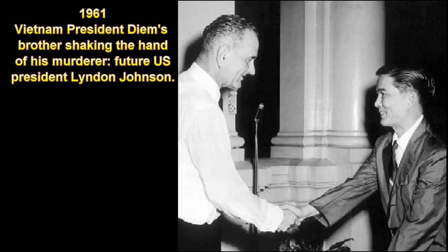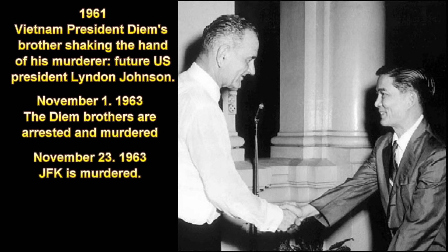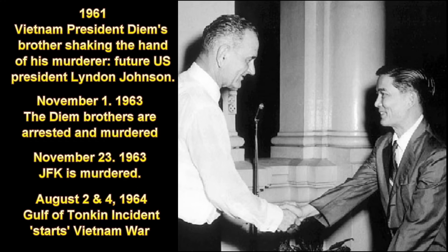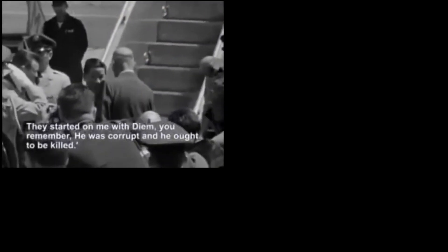In 1961, Vietnam President Diem's brother shook the hand of his murderer — future U.S. President Lyndon Johnson. On November 1, 1963, the Diem brothers were arrested and murdered. Twenty-two days later, JFK was murdered. And on August 2 and 4, 1964, the Gulf of Tonkin incident started the Vietnam War. In an audio recording, LBJ says: 'They started with me on Diem, you remember. He was corrupt and he ought to be killed. So we killed him. We all got together and got a bunch of thugs and we went in to assassinate him.' Do American presidents murder people? Yes, they do murder people.